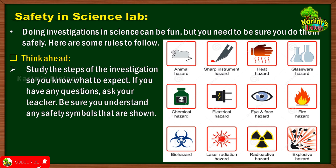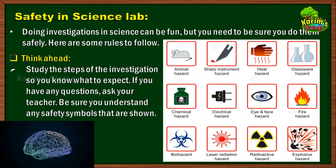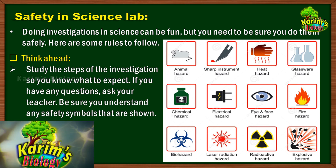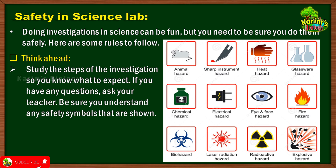Before you start doing any experiment, you should make a note of all the requirements and arrange them in order. Then you can start doing the experiment. There may be some chemicals, glassware, or apparatus required for performing experiments in the science lab. When you look at the chemical compounds, glassware, or apparatus you are using, there will be some labels on them with symbols printed on those labels.